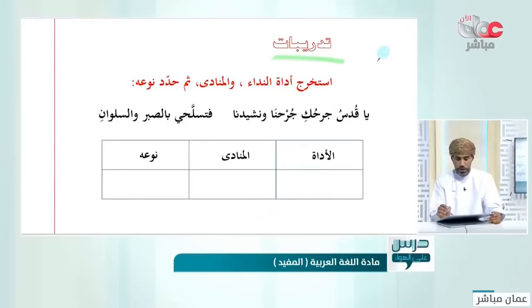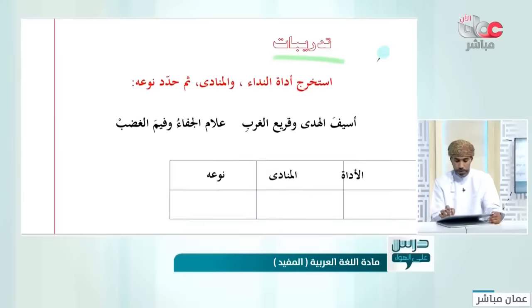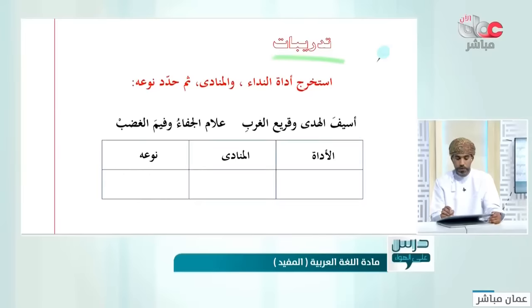يا قدس جرحك جرحنا ونشيدنا فتسلحي بالصبر والسلوان. أسلوب النداء: يا قدس. الأداة 'يا' والمنادى 'قدس'. نوعه: القدس اسم مدينة وهو من الأعلام، إذن نوعه علم مفرد.